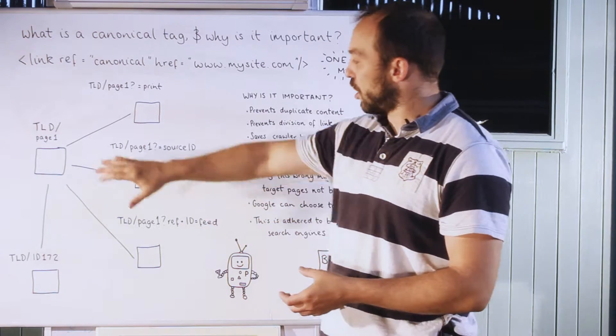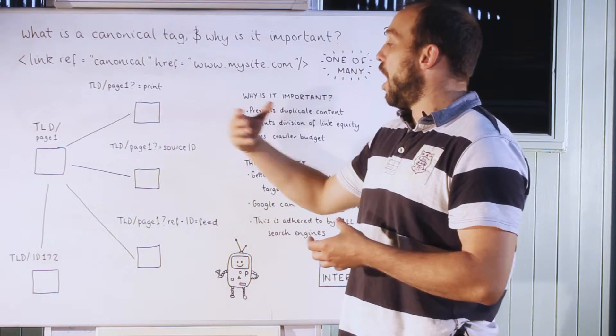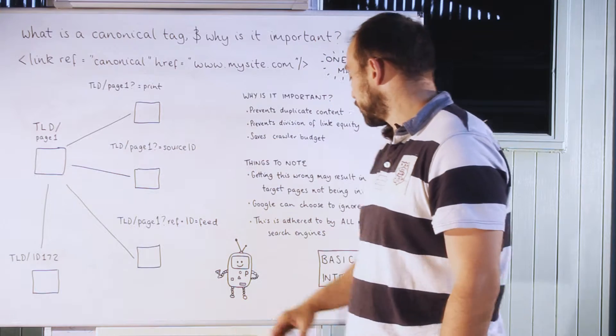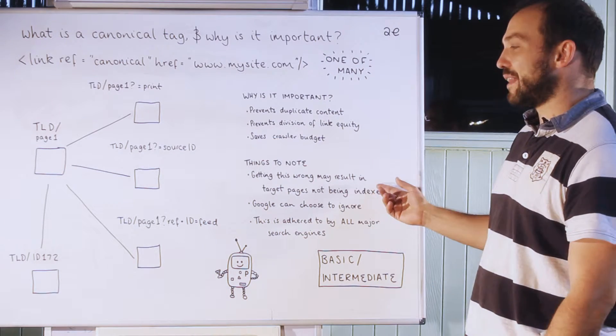And also finally, saves on crawler budget. If Google's got to crawl all these five pages again over and over again, you're wasting important time in Google's crawler when it could be doing other things on your site. So things to know: getting this wrong may result in pages not getting indexed, it causes quite a lot of problems as well.